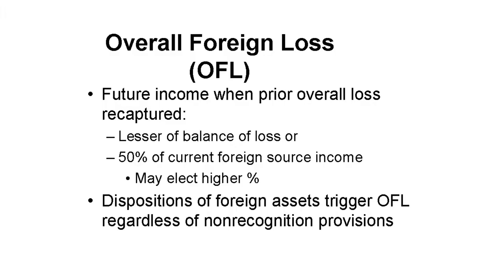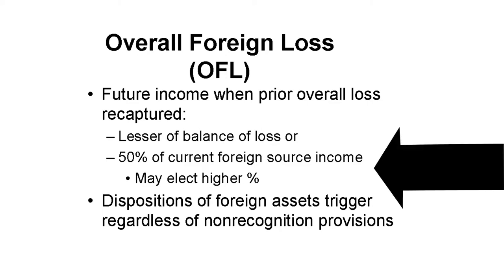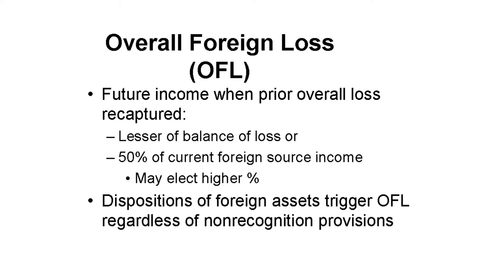It's a bit different where there's an overall foreign loss that reduced otherwise taxable domestic income. Future foreign source income must be recharacterized, but here you get to choose how much to recharacterize each year — at least half of the foreign source income must be treated as domestic, but you can choose a higher portion. If you dispose of assets that generate foreign source income, any gain is recognized and recharacterized regardless of any non-recognition provisions.